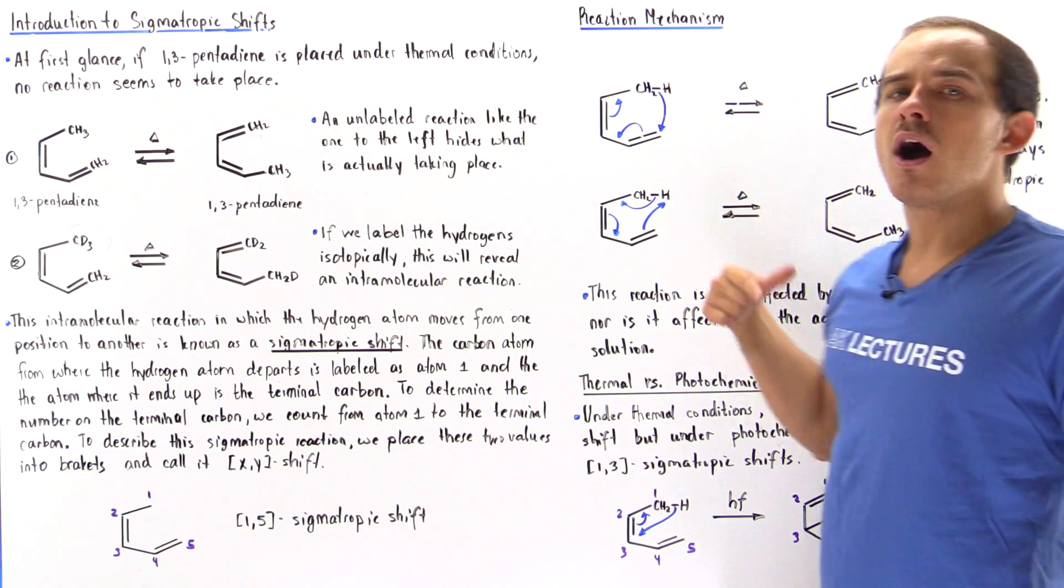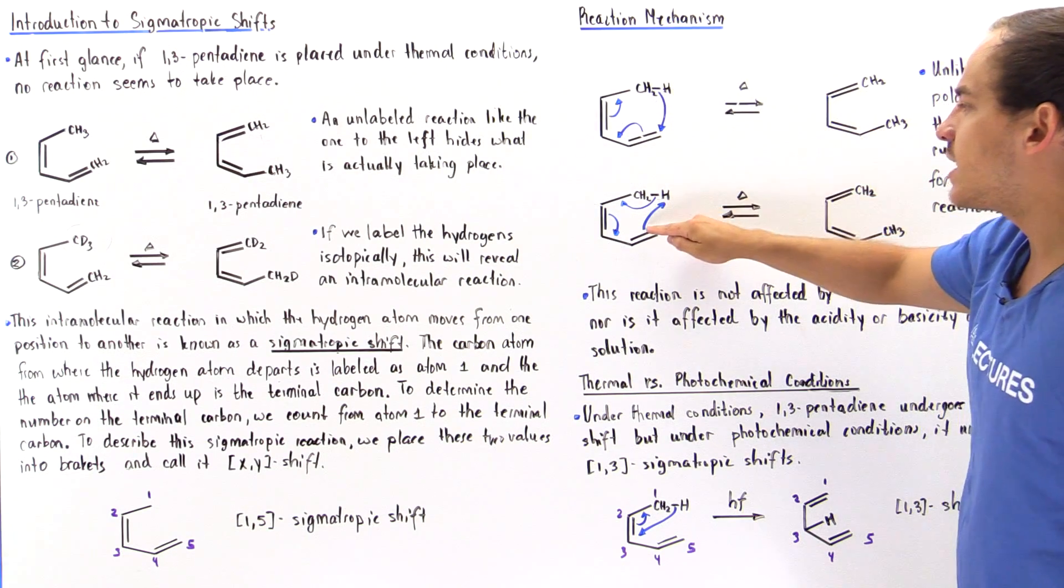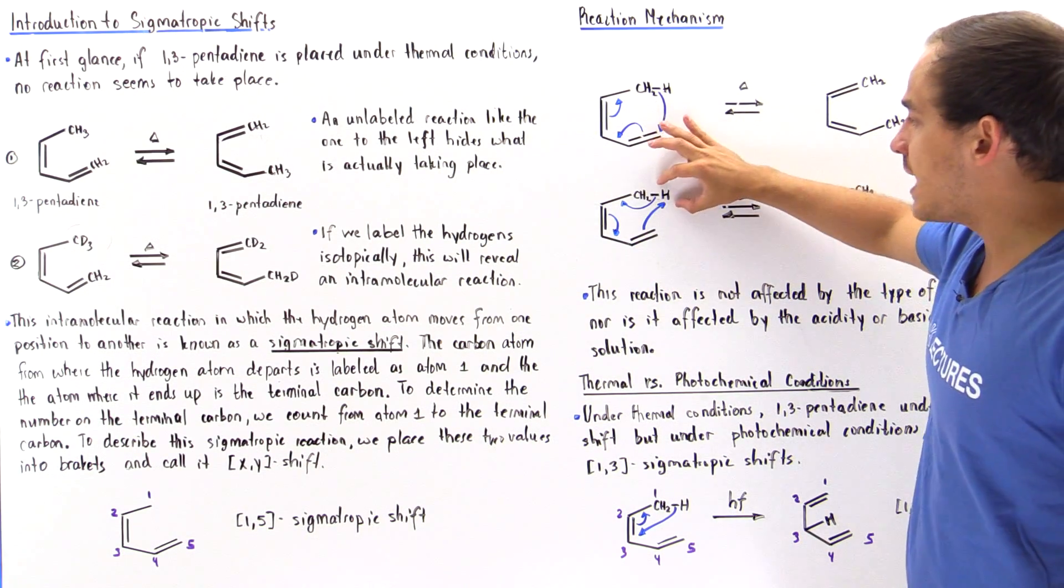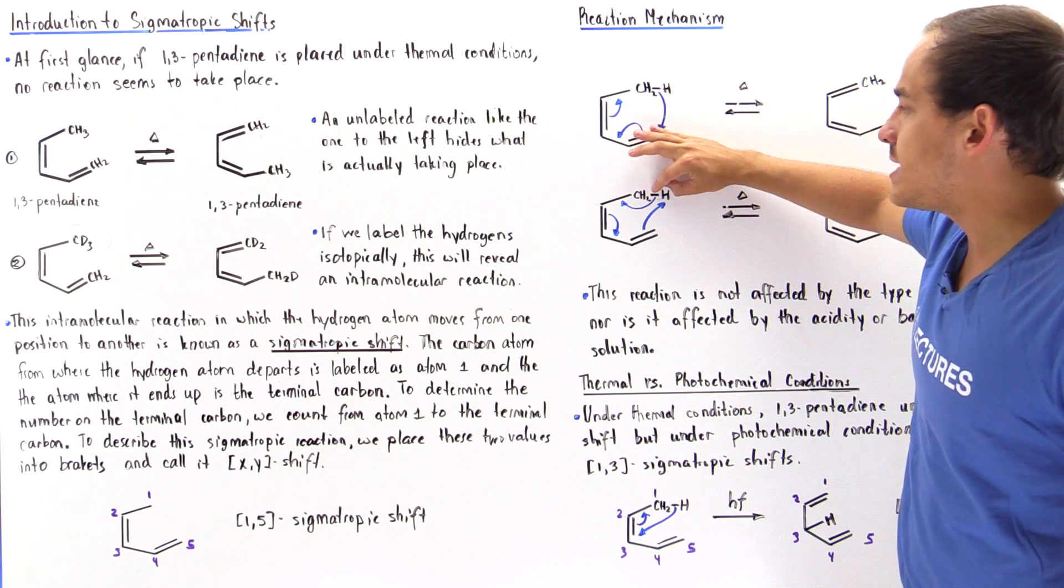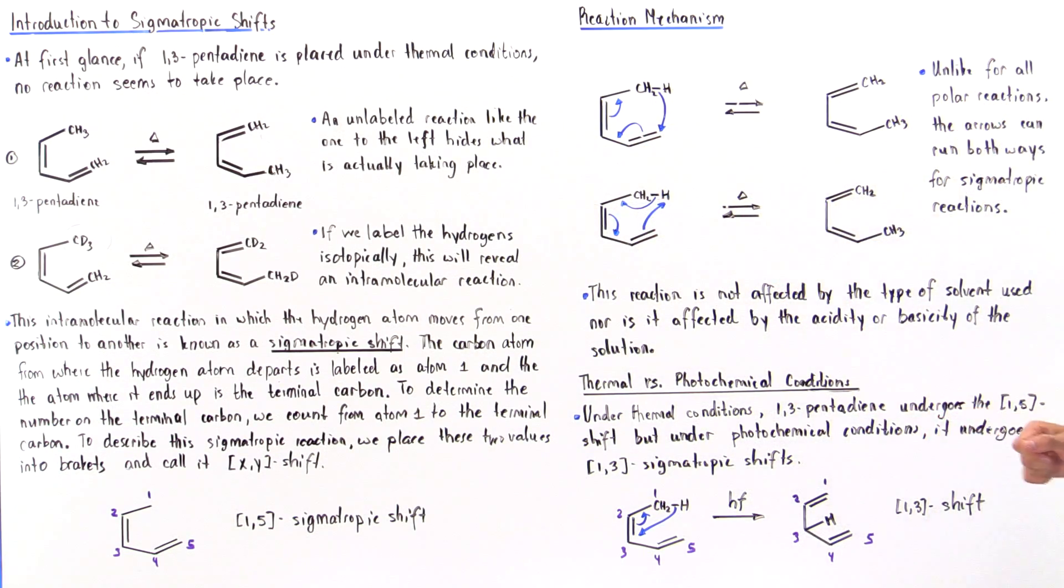Now, we can also go in the other direction. So here we go clockwise, but here we go counterclockwise. This pi bond can also take off the H atom, breaking this bond, which forms a pi bond, breaking this bond, forming a pi bond here.